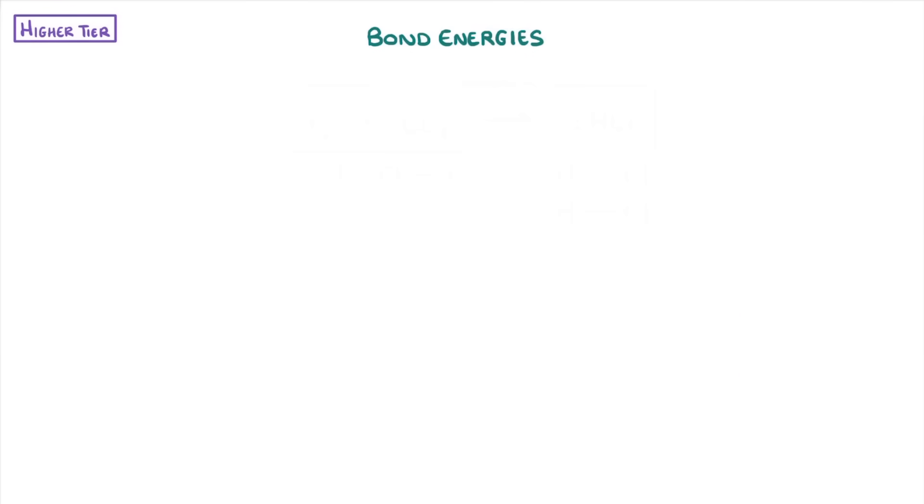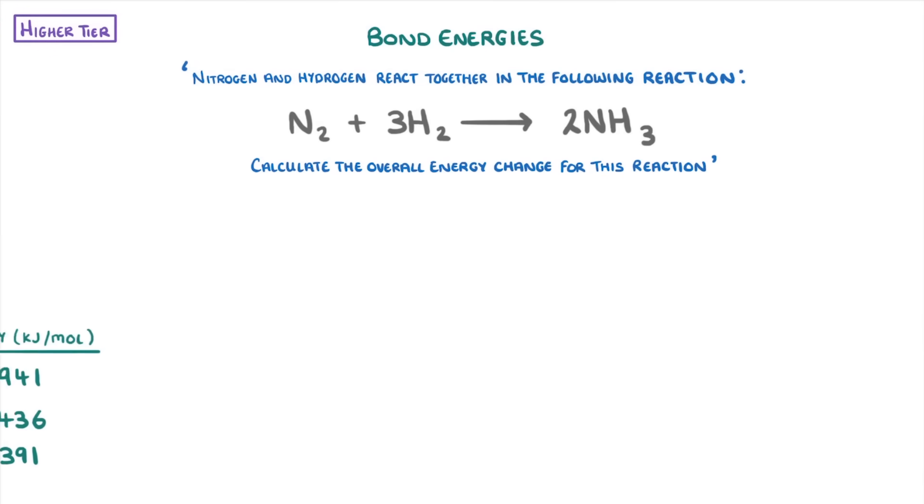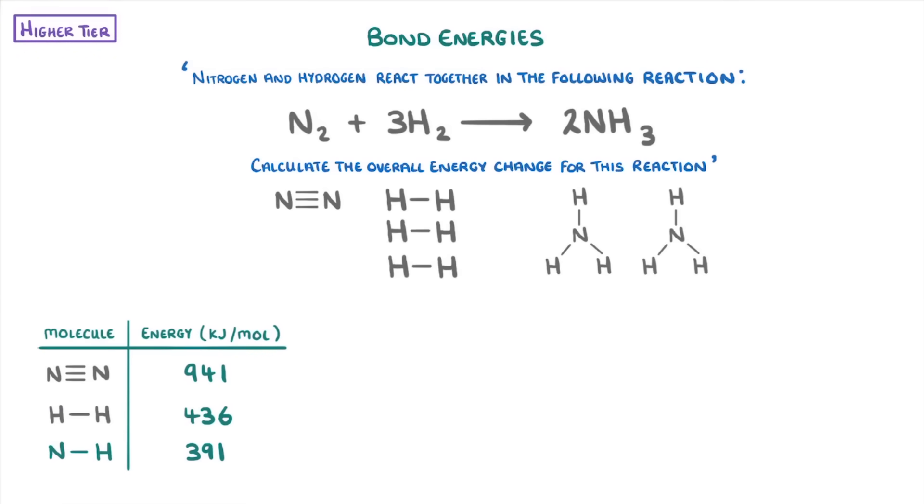Before we finish, let's try one more example. Nitrogen and hydrogen react together in the following reaction. Calculate the overall energy change for this reaction. Now, although you don't have to, I think it's definitely easier if the first thing you do is draw out all the molecules using their displayed formula, so that you can actually see the bonds.